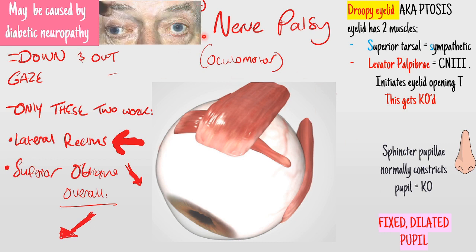This is what a third nerve palsy will look like. Which eye is affected? Well done for those who said this eye. It's on our left side, which means it's the patient's right side - remember you're looking at them, so the patient's right eye is affected. Their eyelid is lower - that's called ptosis. Their eye is looking down and out at the normal position, even without being asked to. And you can see the right pupil is actually much bigger - dilated and fixed. Those are the classic symptoms of a third nerve palsy.